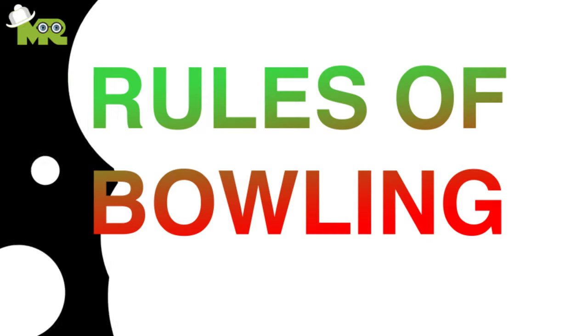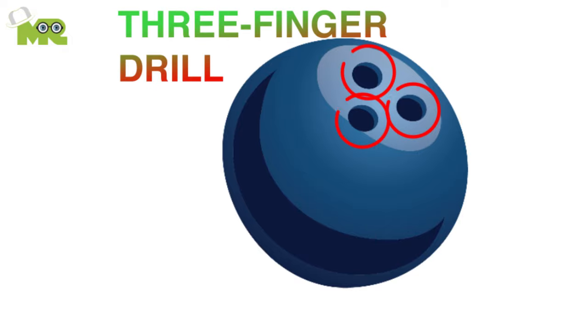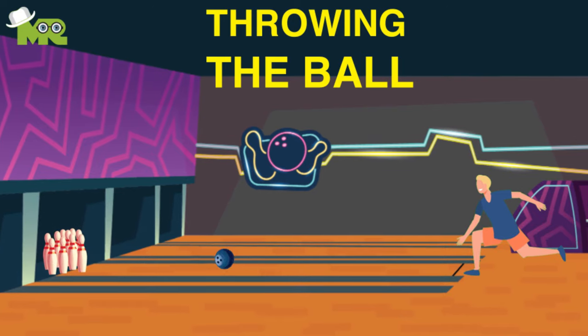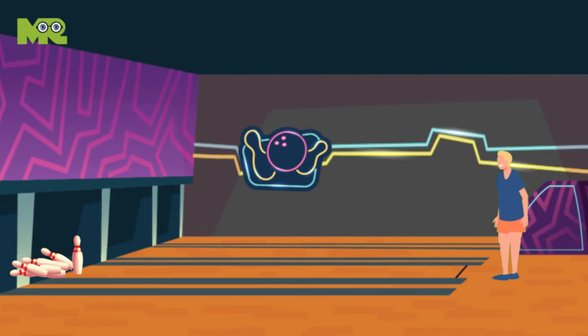Rules of Bowling. It is necessary for the players to hold the ball using the three-finger drilled holes on the ball. Each frame consists of throwing the ball twice to knock down all the pins.